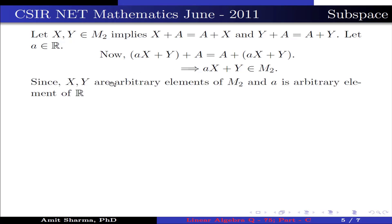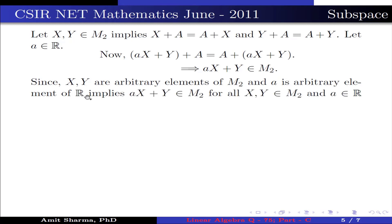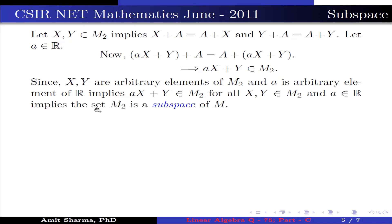Since x, y are arbitrary elements of M2 and α is an arbitrary element of R, this implies αx + y belongs to M2 for all x, y in M2 and α in R. This implies the set M2 is a subspace of M. Therefore, option 2 is correct.